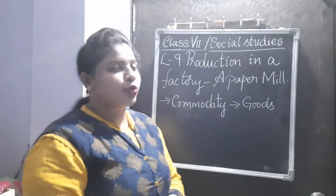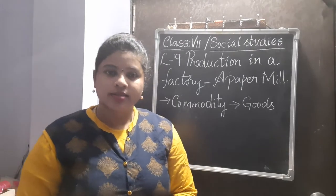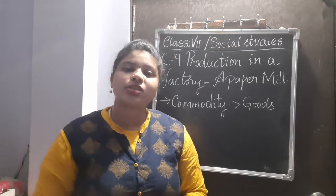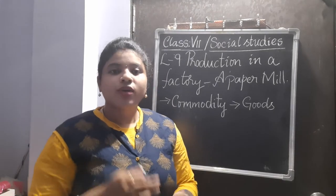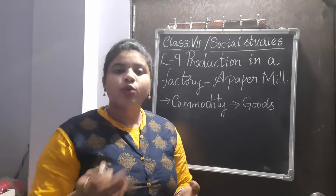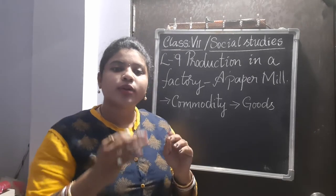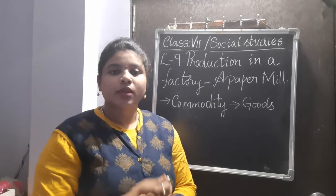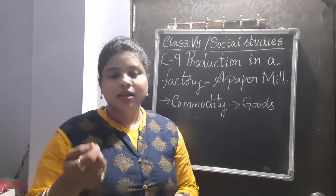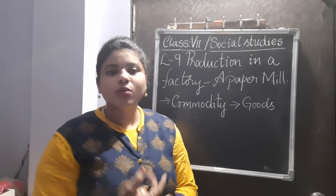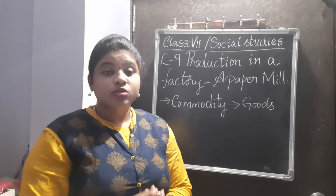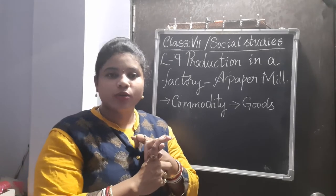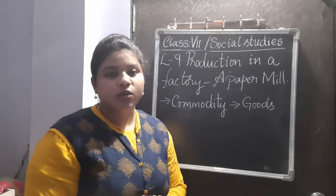To produce any commodity, they need some raw materials. For example, if you want to decorate your class for Independence Day, your class teacher has given you a task. First you plan, you collect money, then you get the materials required to decorate the class - for example, ribbons, balloons, sparkles, glitter sheets. All these things are known as raw materials.